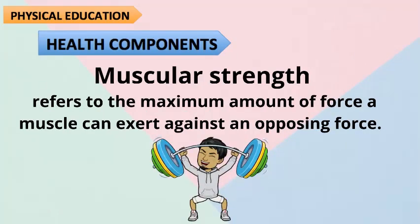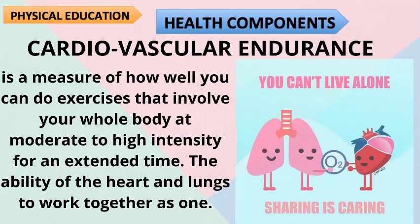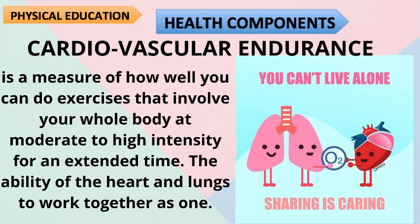Muscular Strength refers to the maximum amount of force a muscle can exert against an opposing force. Muscular Endurance refers to the ability of the muscle to work over an extended period of time without fatigue — specifically, how well you can do exercises involving your body at moderate to high intensity for extended time. Cardiovascular Endurance is the ability of the heart and lungs to work together as one.